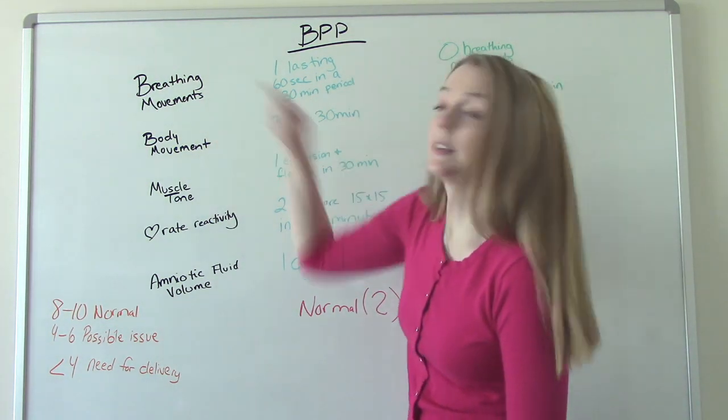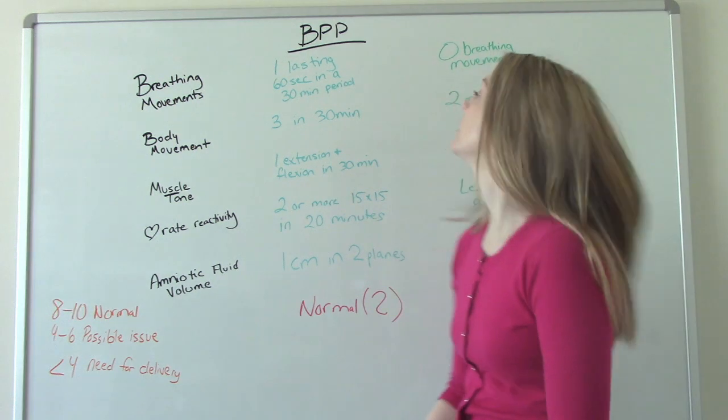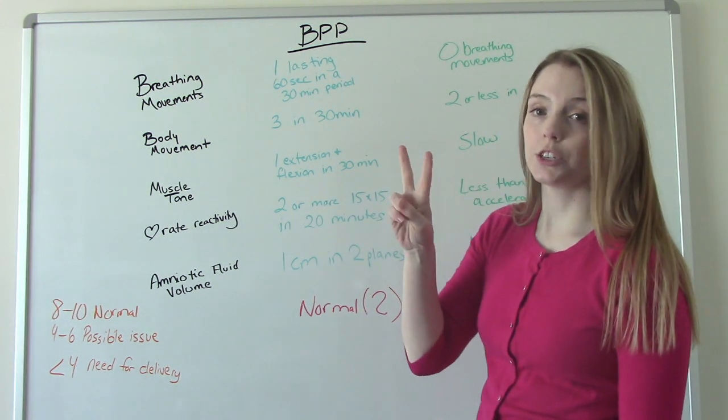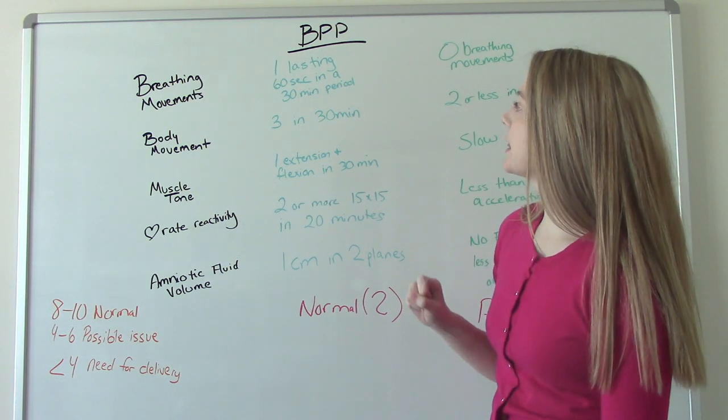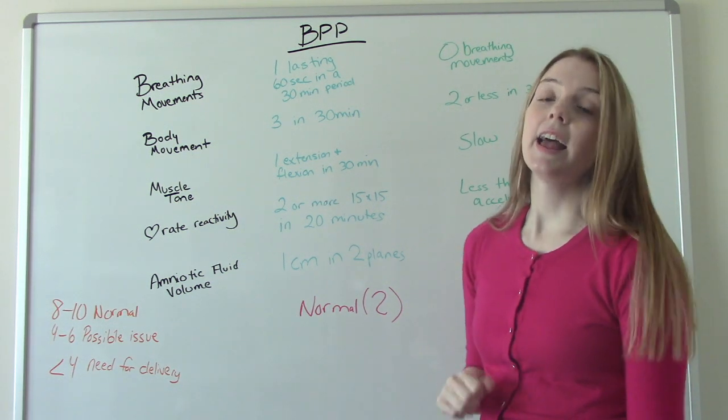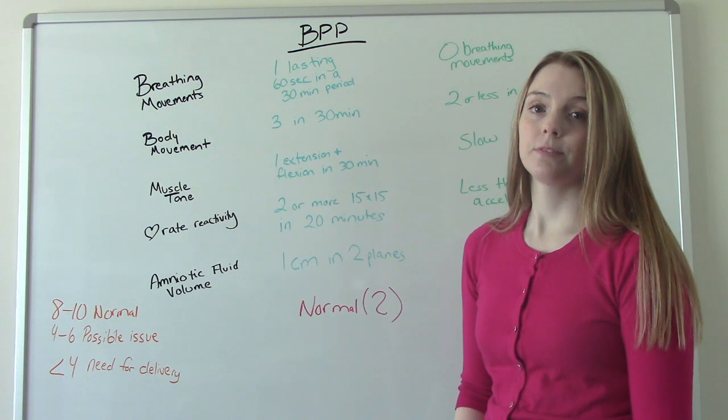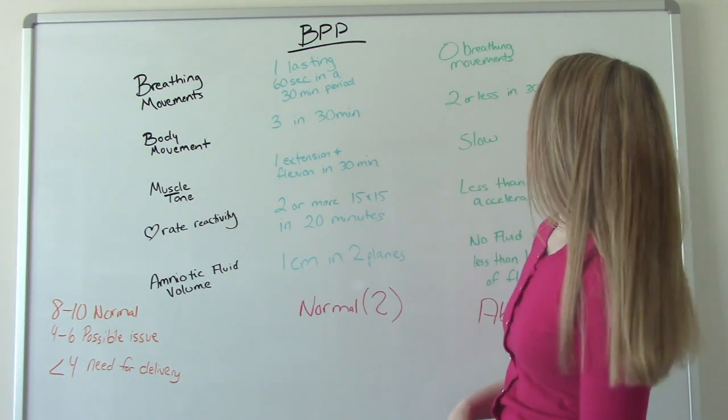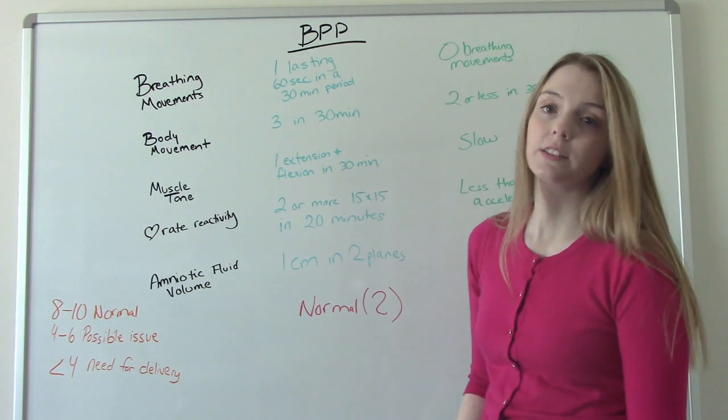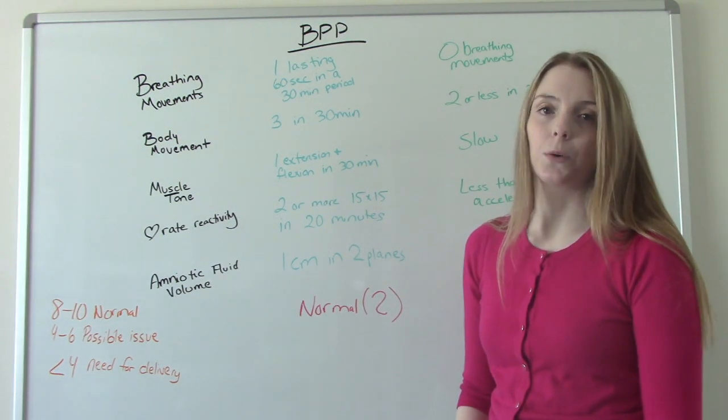So our first category is breathing movements. Normal or a two will be they have at least one breathing type movement lasting 60 seconds in a 30 minute period. And if they can do that they get a two. If they can't do that, they have no breathing movements in a 30 minute period, they get a zero for that category.